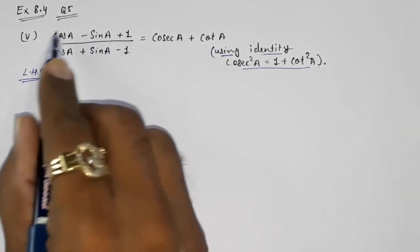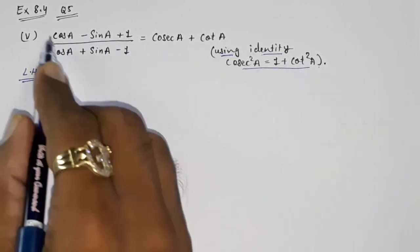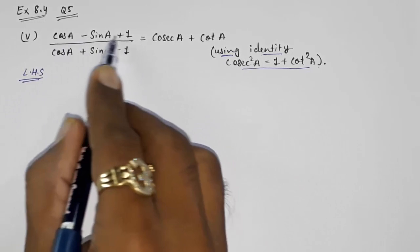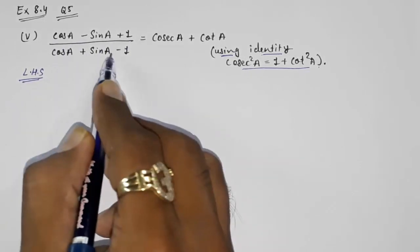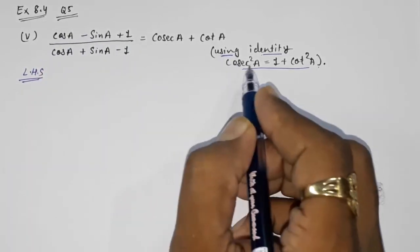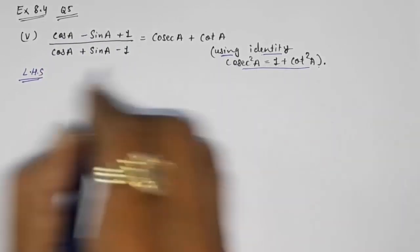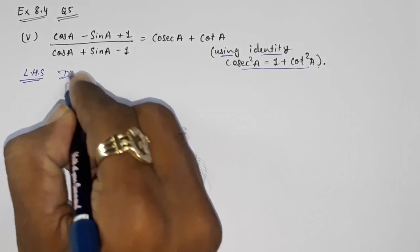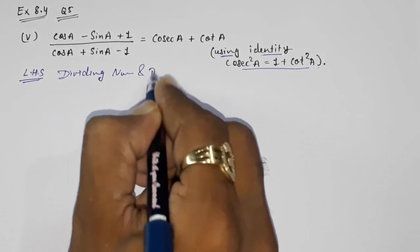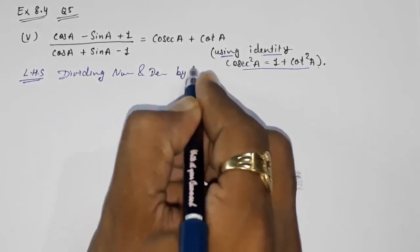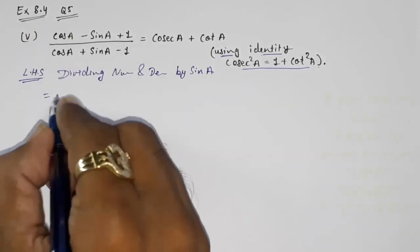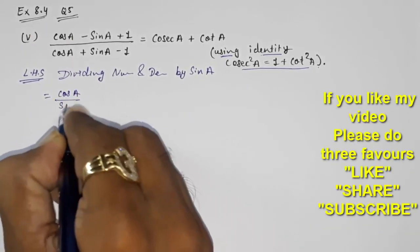Now we want to convert all these numbers into cos A and cot A, so how can we convert this? If I divide all the numbers of numerator and denominator by sin A, then I can convert all these numbers into cos A and cot A. So dividing numerator and denominator by sin A, what will happen? Numerator: cos A upon sin A minus sin A upon sin A plus 1 upon sin A.